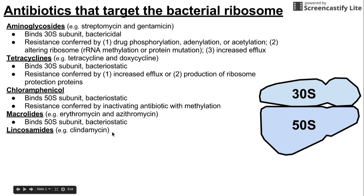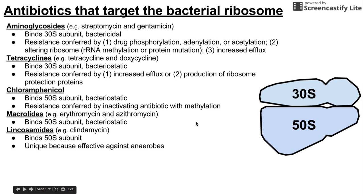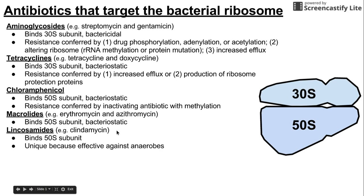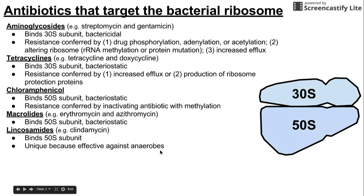The next class is the lincosamides, such as clindamycin. Lincosamides also bind to the 50S subunit. They are notably unique because they are effective against anaerobes, whereas most other classes discussed are effective mainly against bacteria that use oxygen.